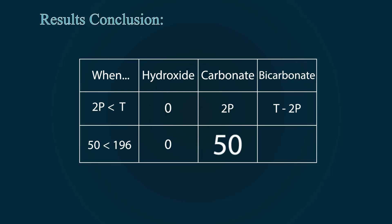In our results, our value came as 2P is less than T. That means hydroxyl ion is absent, carbonate ion is 2P, and bicarbonate ion is T minus 2P. For our values, 50 is less than 196, so hydroxyl is 0, carbonate ion is present as 50, and bicarbonate is found with 196 minus 50.